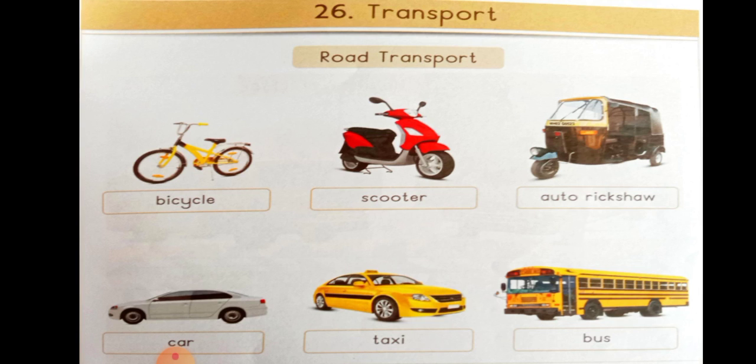What do you see on the road? Cycle, scooter, auto rickshaw, car, taxi, bus.